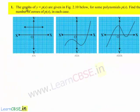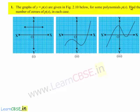Coming to the first problem: the graphs of y equal to p of x are given in the figure below for some polynomials p of x. Find the number of zeros of p of x in each case.